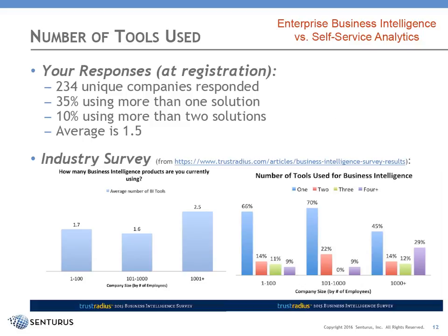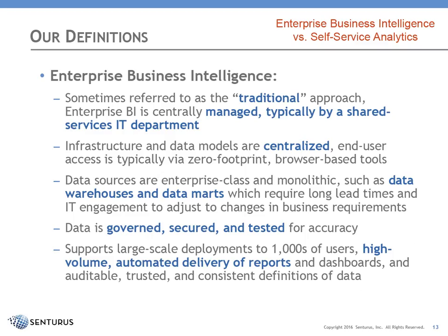Behind the scenes, more and more companies are using more than one tool. From attendees in today's session, 234 unique companies responded: 35% are using more than one solution, 10% more than two solutions, and the average was around 1.5. It's clear that organizations are turning to a broad set of tools as this space increases in size, moves into many different functional areas in the business, and adapts to higher-speed, higher-frequency decision making.